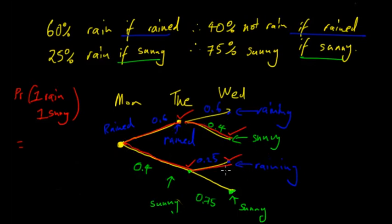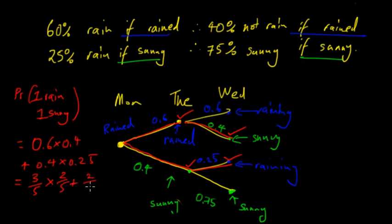So as both pathways are fine, we have to add them together. So 0.6 times 0.4 plus 0.4 times 0.25. So we'll take this as a tech free question as well. So 0.6 is 3 on 5, 6 on 10 simplified down. 4 on 10 is 2 on 5. Plus 2 on 5 times 1 on 4. Gives us 6 on 25.